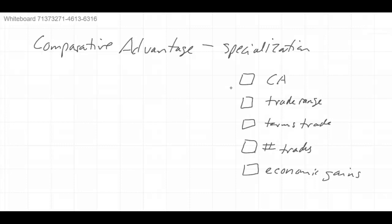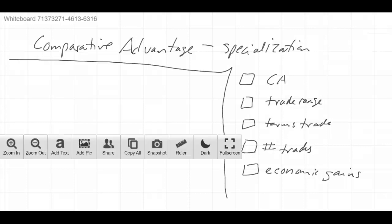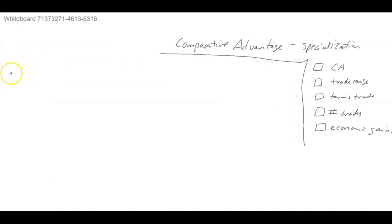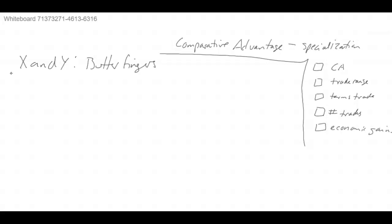There are kind of two potential scenarios that this would be asked about, so I'll go through each one. We're going to go through these five steps. The scenario I've come up with today is we have companies X and Y, and they make goods. I'm getting ready for Halloween in my household, so we're going with Butterfingers and Milky Ways.